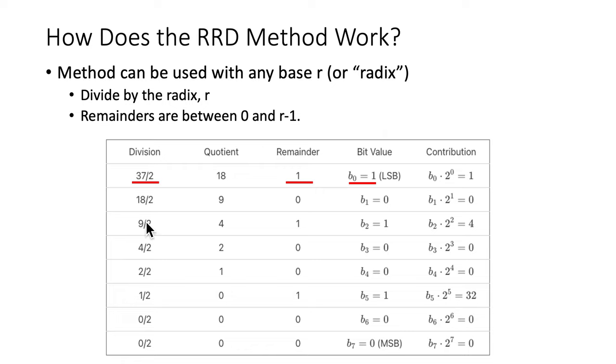Okay, now this method can be used with any base r radix. The radix would appear here in these divisions, and the remainders that we get would vary between 0 and r minus 1. So we would pick up larger numeric values here for each radix place instead of just the 0s and 1s for the bit places.